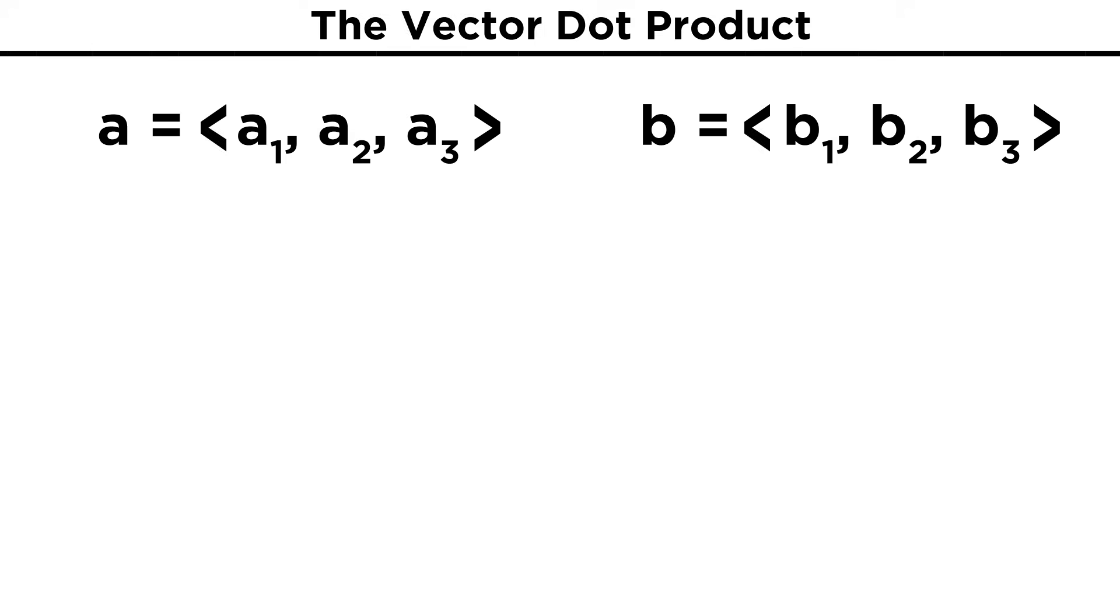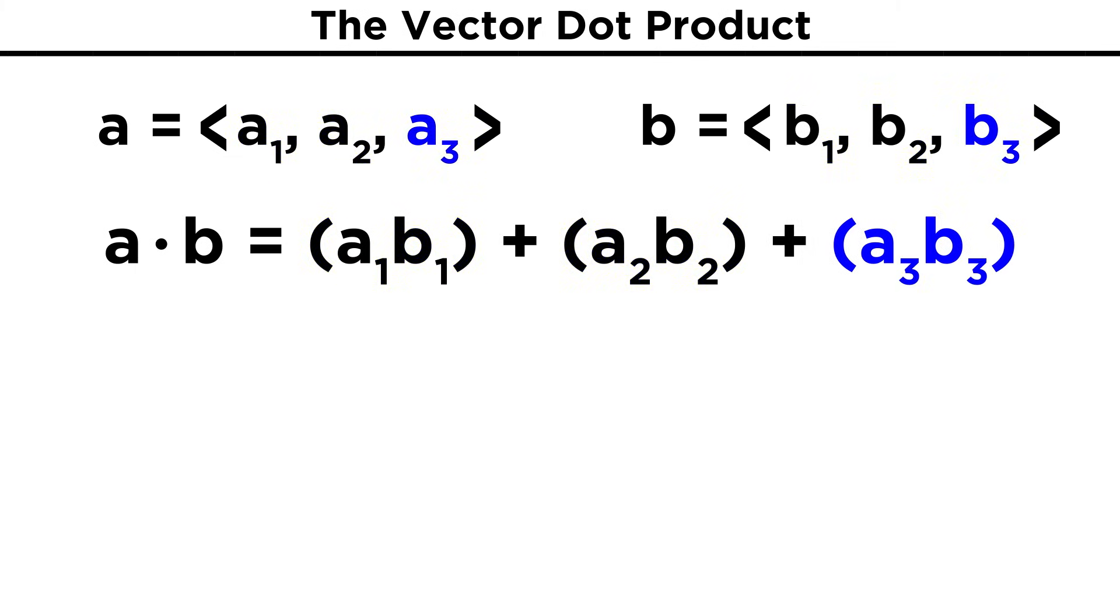The dot product is fairly intuitive. If we have some vector A with components A1, A2, and A3, and another vector B with components B1, B2, and B3, then its dot product will be denoted this way as A dot B. This will be equal to A1B1, plus A2B2, plus A3B3.